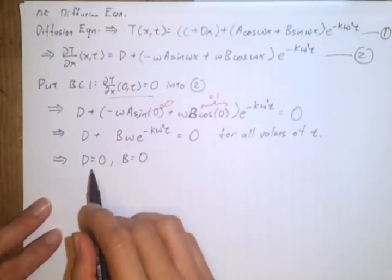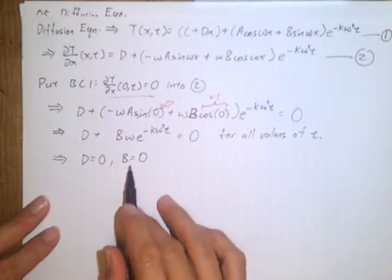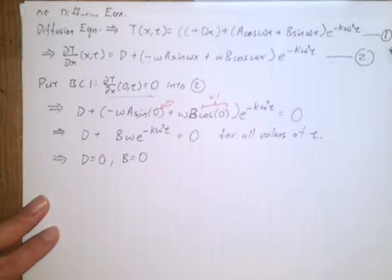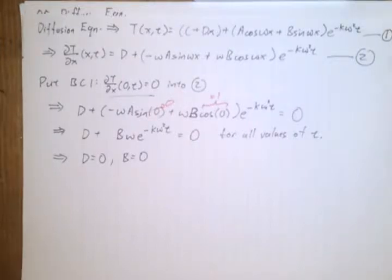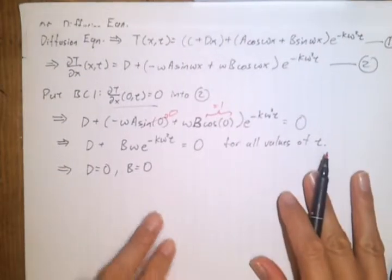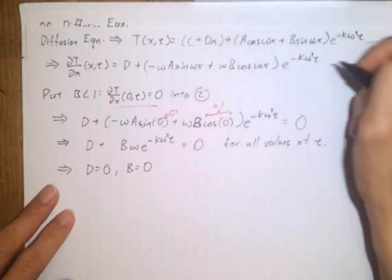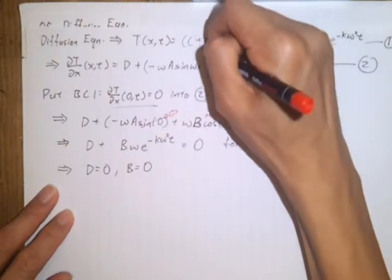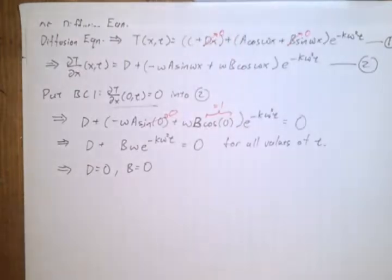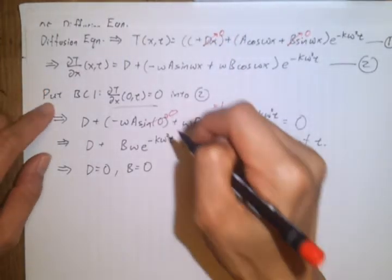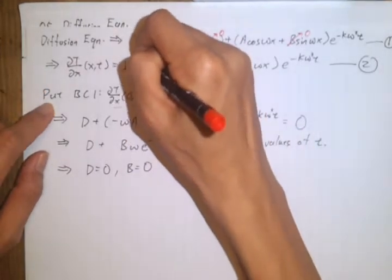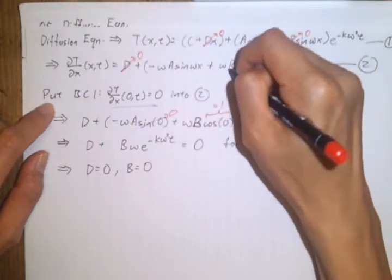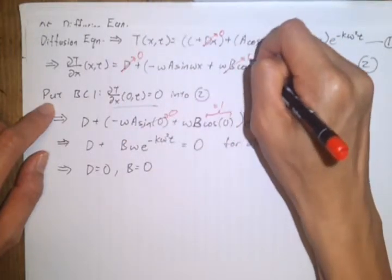We put D equals 0 and B equals 0 into equations 1 and 2, and update the solution accordingly.